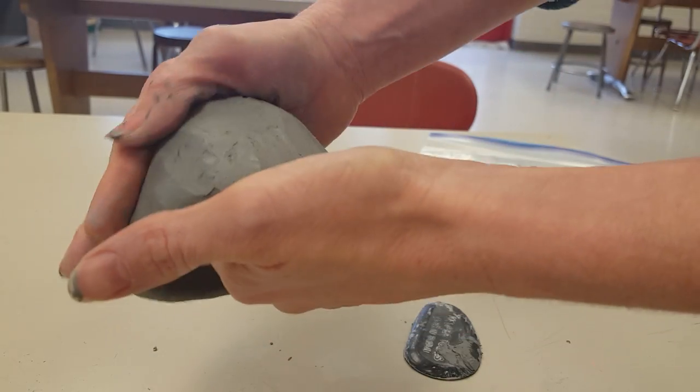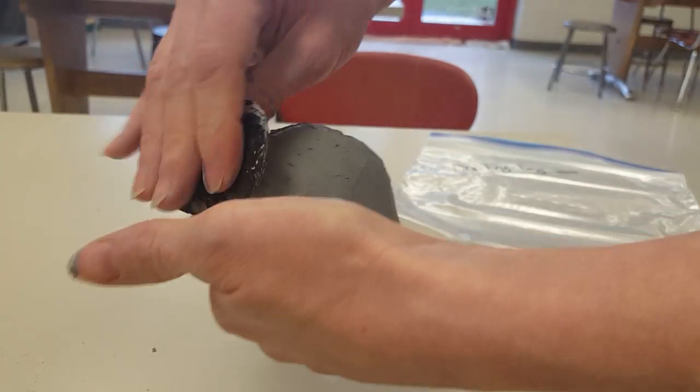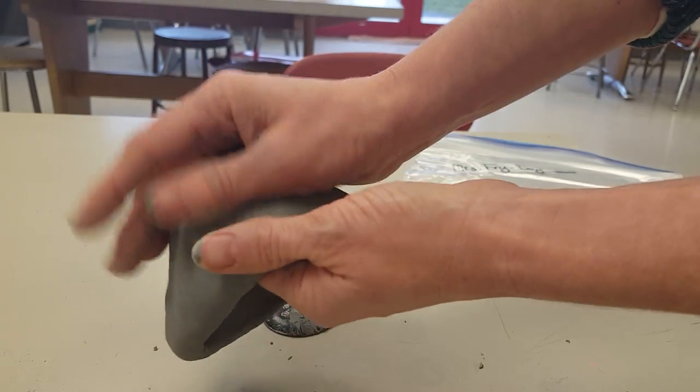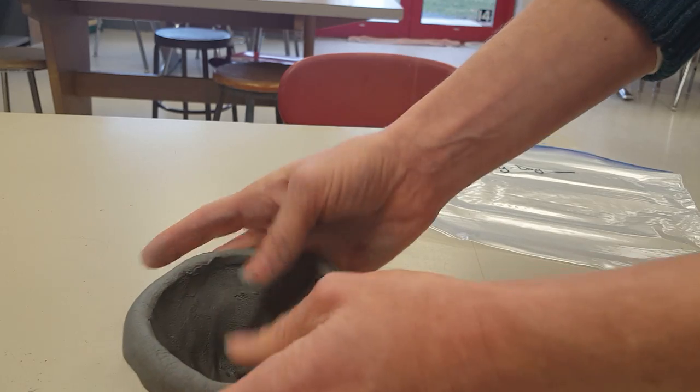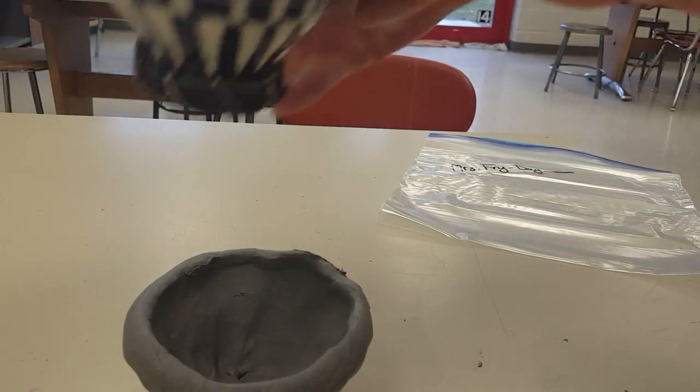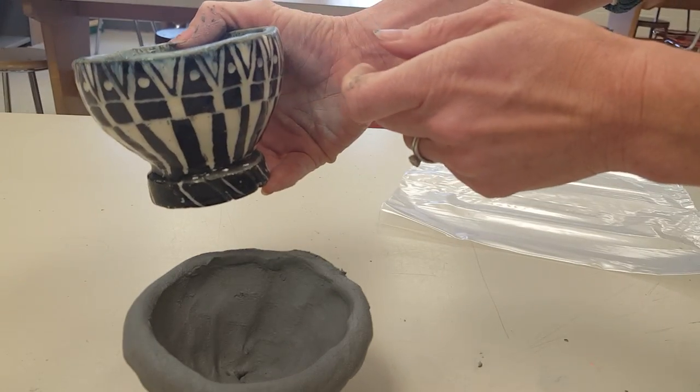So I'm doing this. You can also use your fingers to do this if you don't want to use the rib. And I'm smoothing out my pot until I have it the exact way that I'd like to have it. And that's how you make your pinch pot bowl, which is the top part of your actual pinch pot.